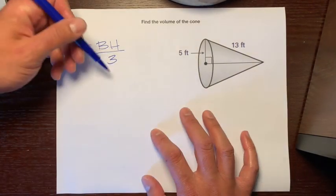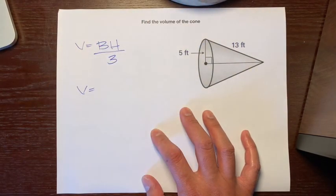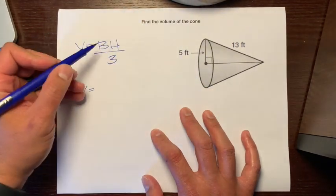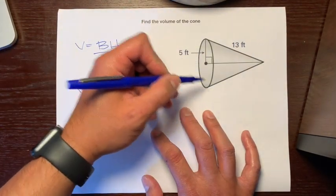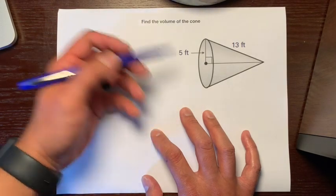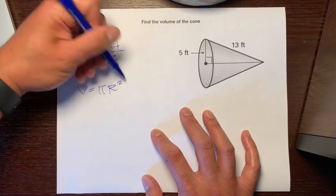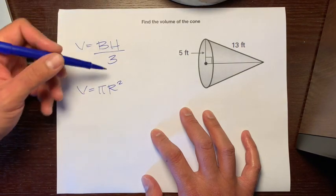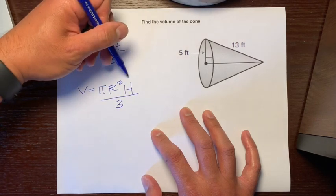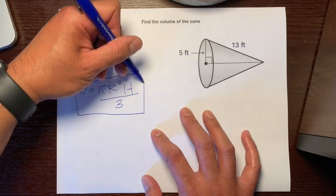So we're going to use this same formula to find the volume of a cone. So let's change this formula a little just to make it work for this special cone right here, which has a base that's a circle. So B stands for base area. What's the formula for the area of a circle? It's pi r squared times the height divided by 3.